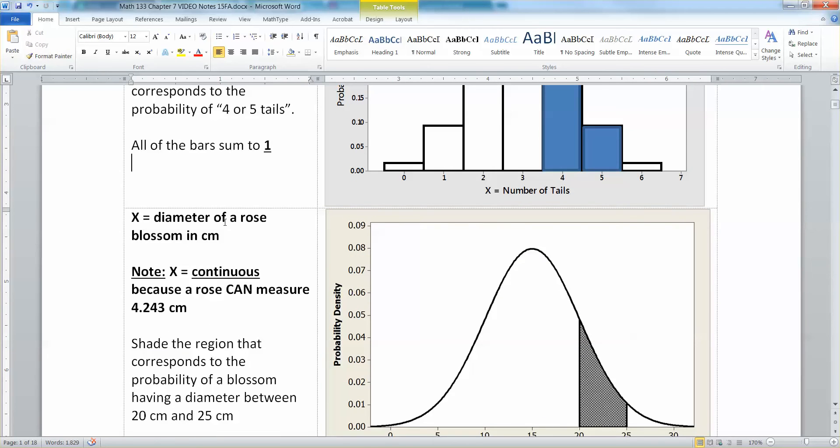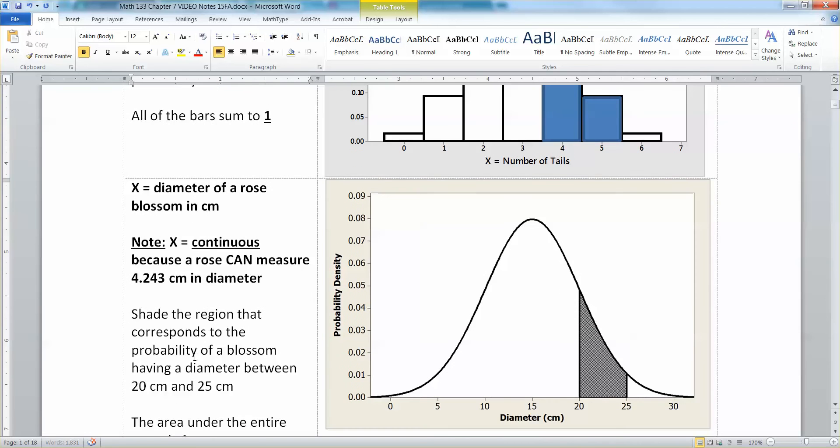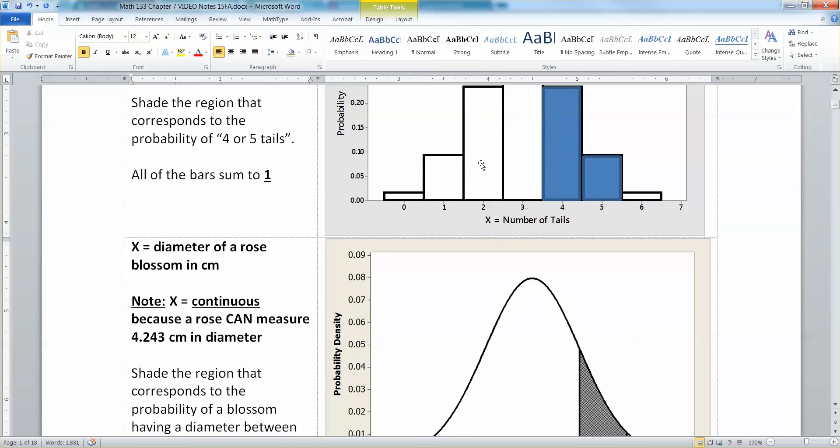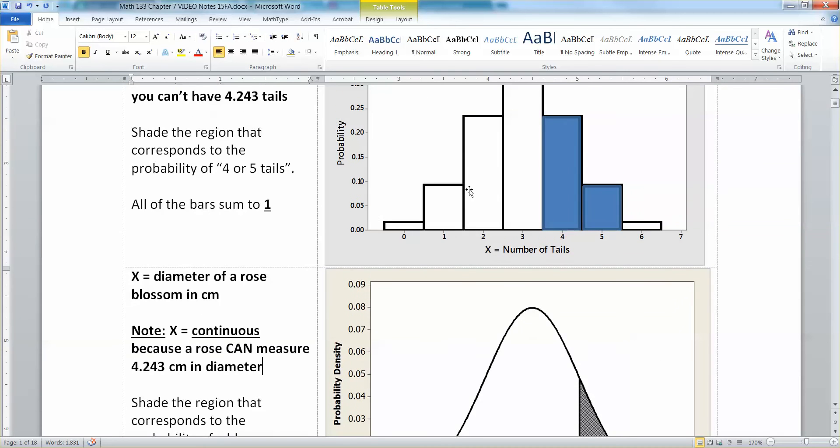Now, what about a continuous distribution, namely the normal distribution? So how does that look? So I have the diameter of a rose blossom in centimeters. Now, notice that's continuous because a rose actually can measure 4.243 centimeters in diameter. So we want to shade the region that corresponds to the probability of a blossom having a diameter between 20 and 25. So I've shaded that right here. There's 20, there's 25, and we've shaded that region. Now, keep in mind the area under the entire curve has to be one because it's a probability density curve. Therefore, all of the areas have to add up to one, just like all of the bars up here had to add up to one because this was a discrete distribution.